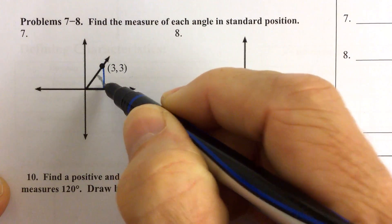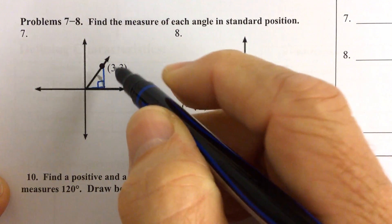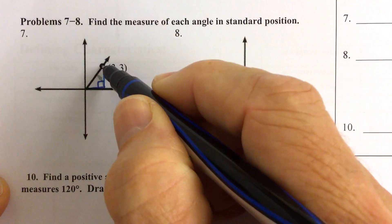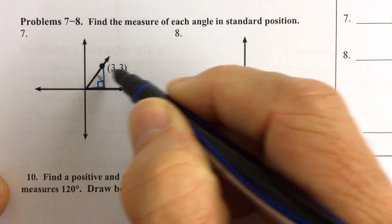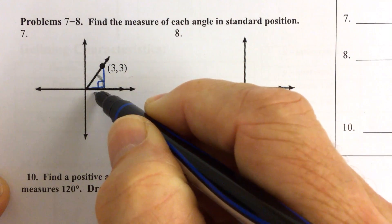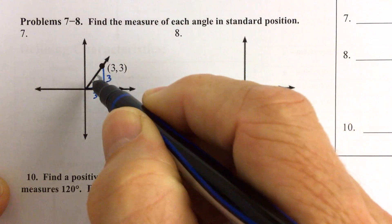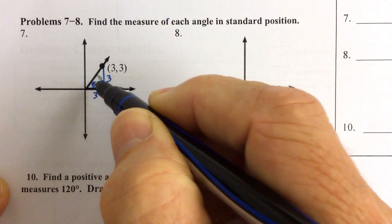And if we make a right triangle, we know that if the coordinates of that point right there are 3,3, it means we go to the right 3 and we go up 3. So really what we're trying to figure out is, what's that angle?